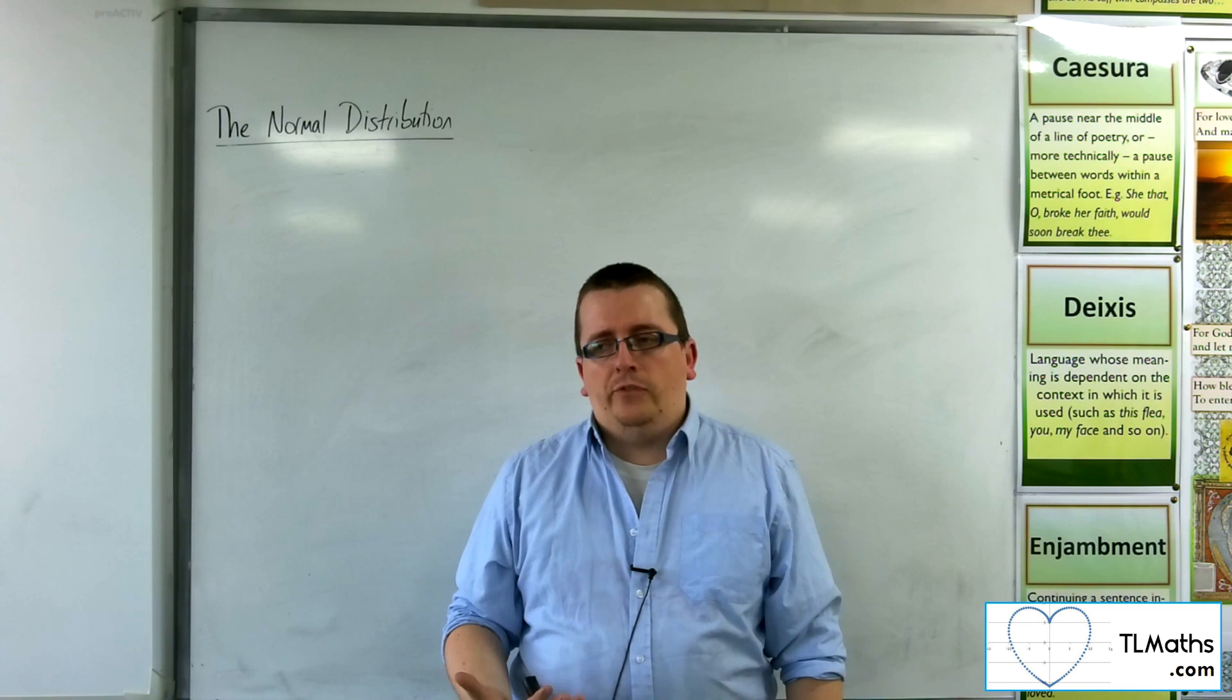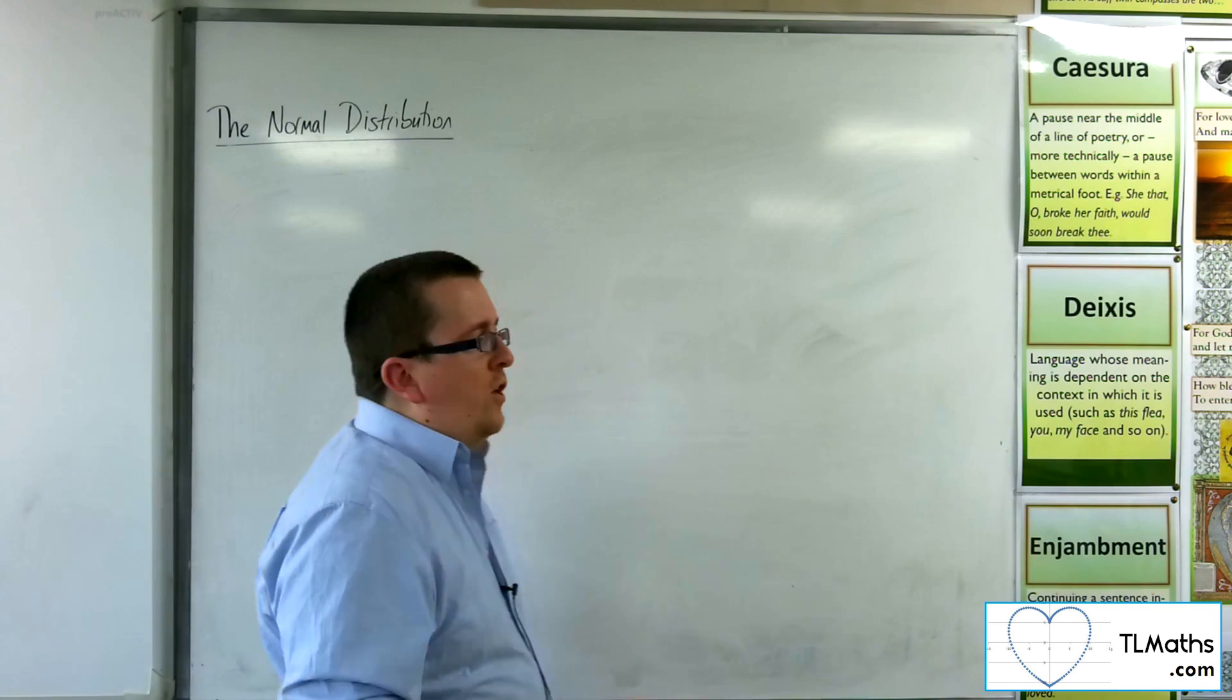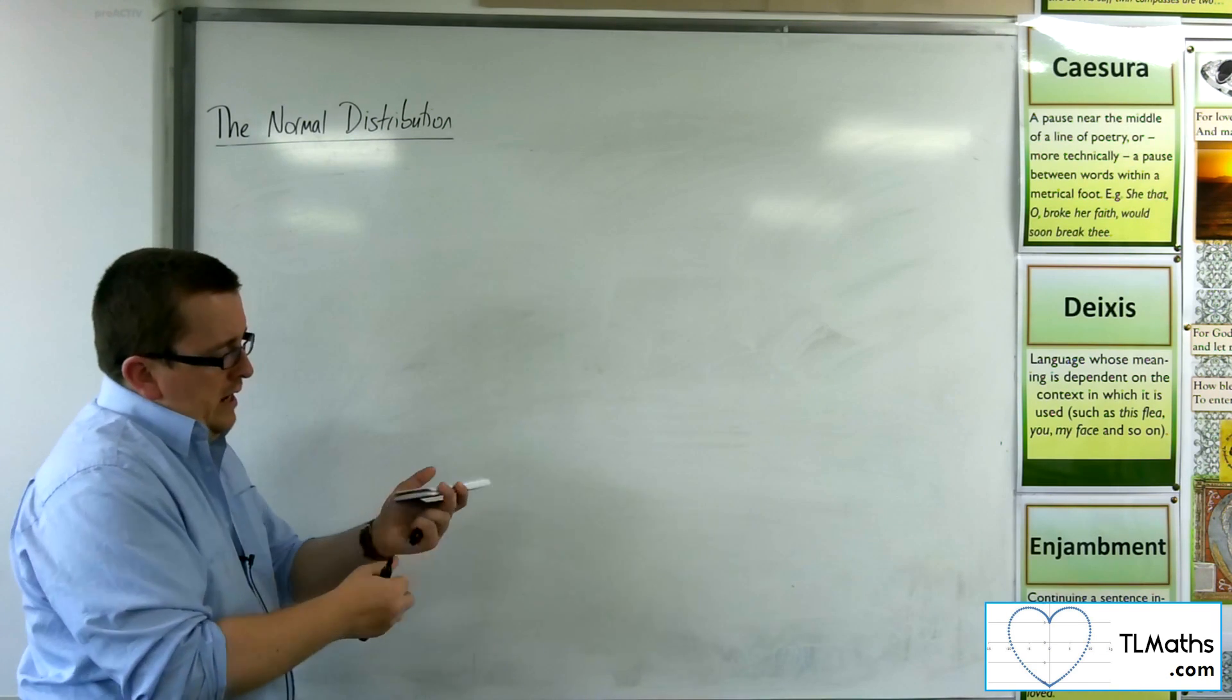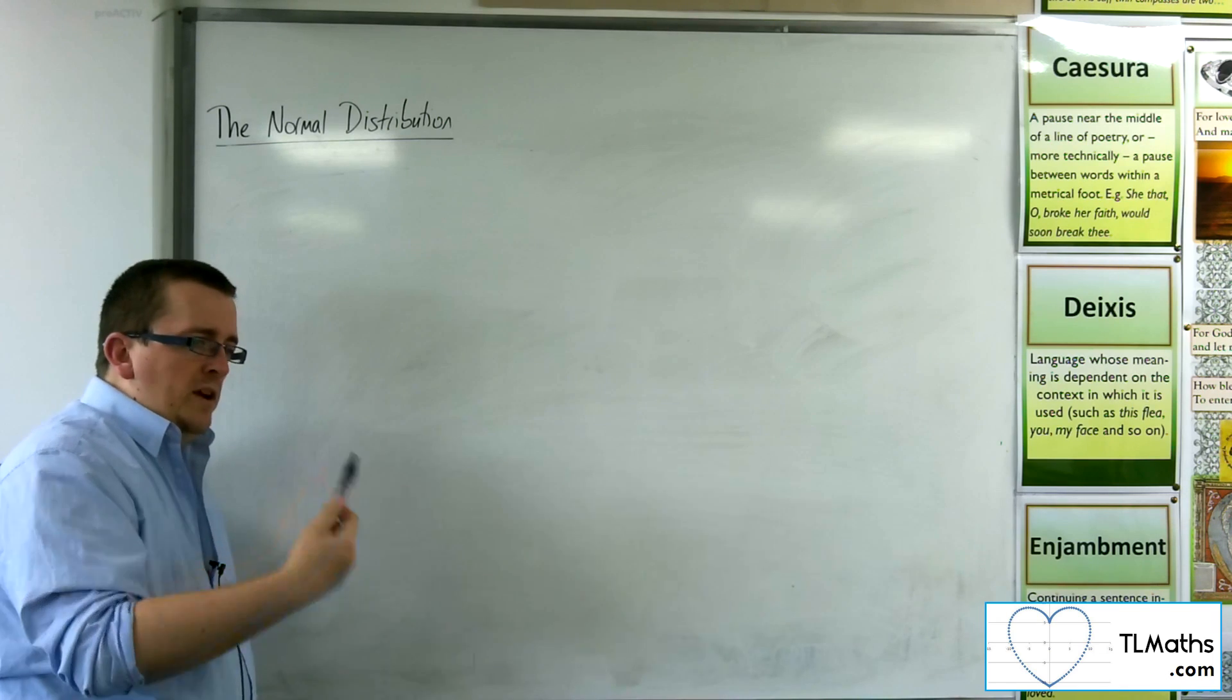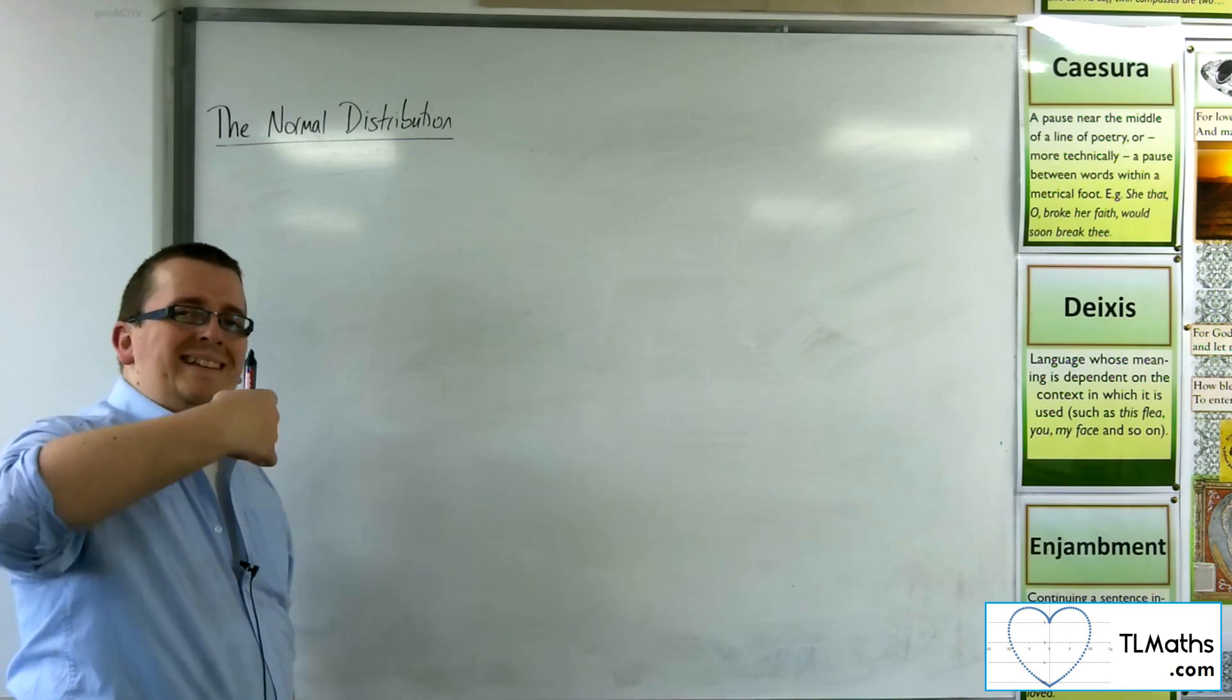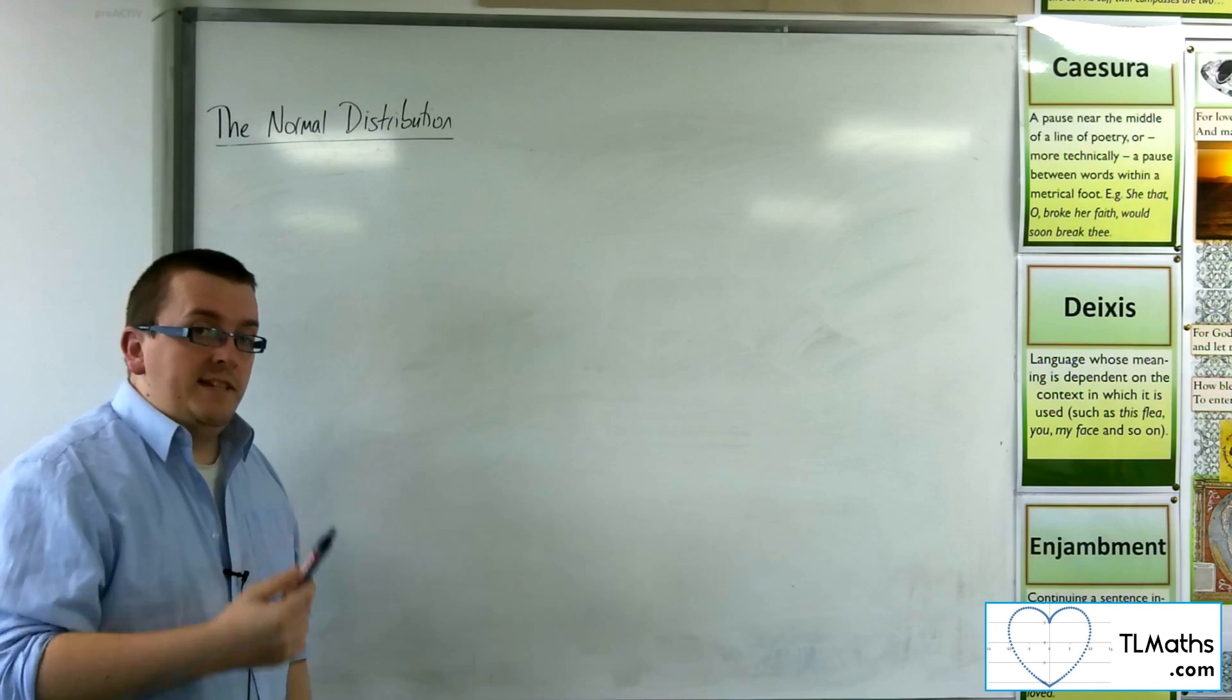Now, this in itself is quite strange, mainly because when you're working with a binomial distribution, you're working with a discrete distribution, whereas a normal distribution is continuous.